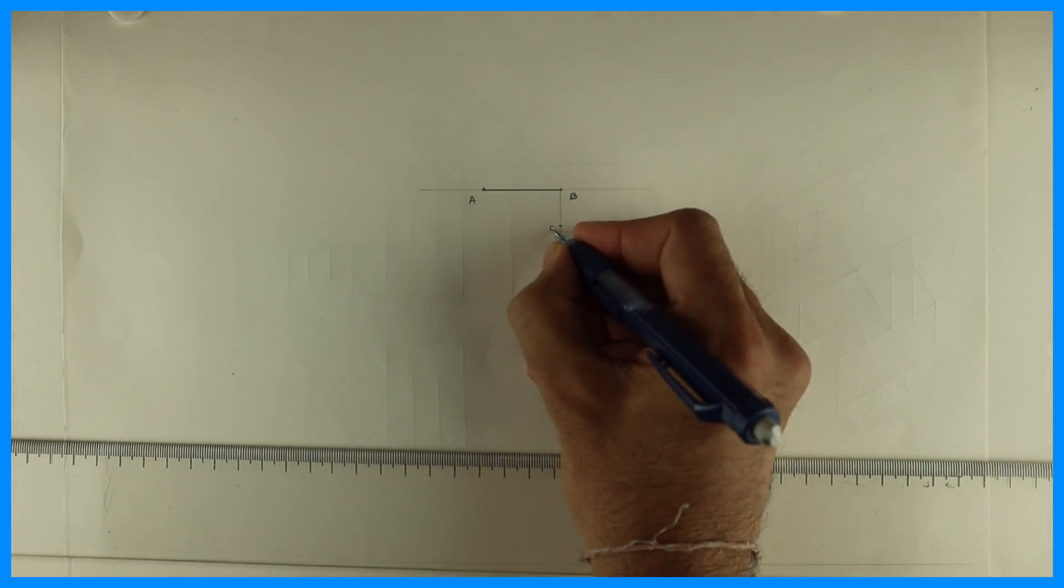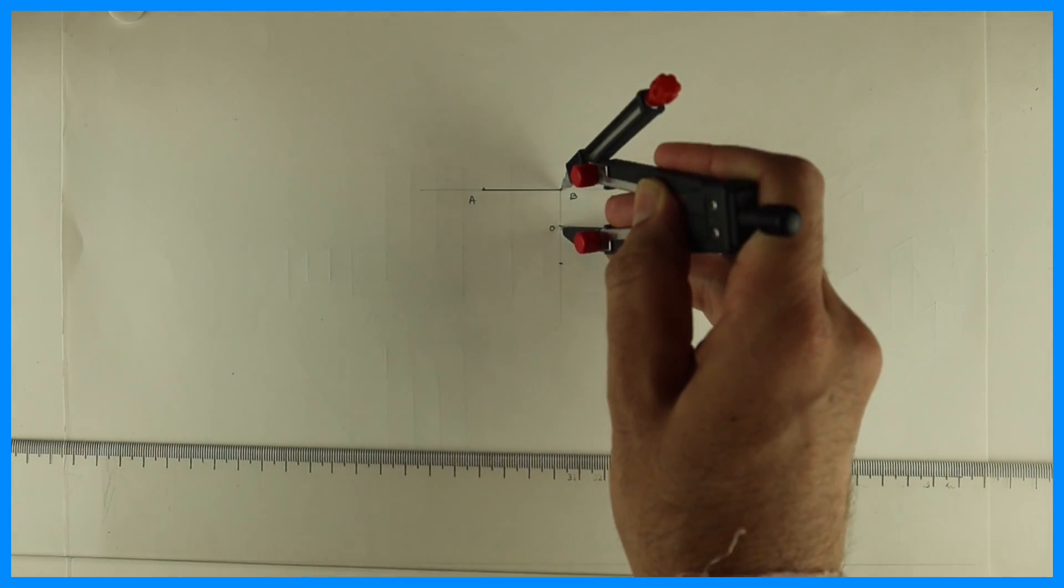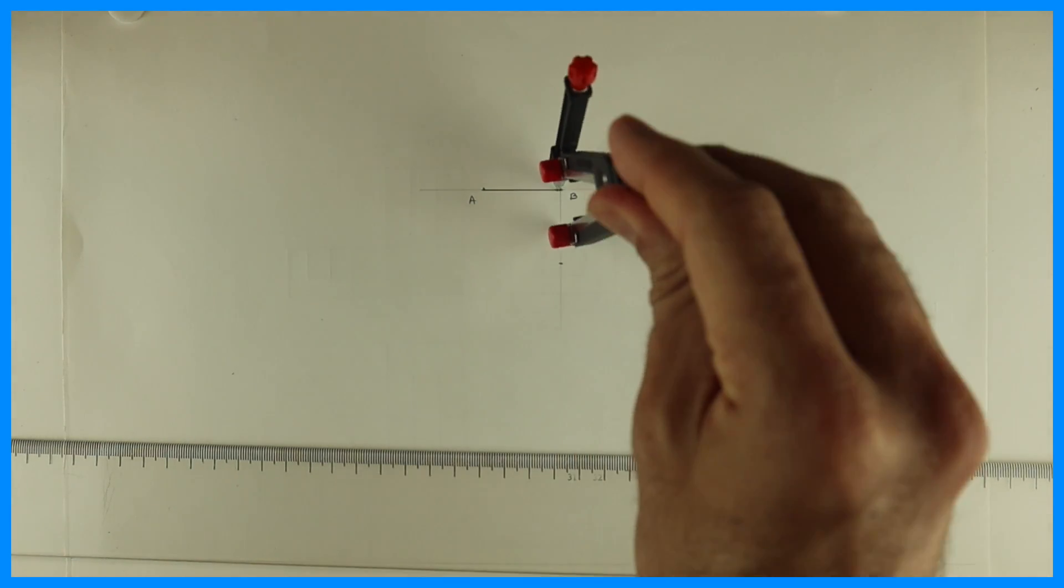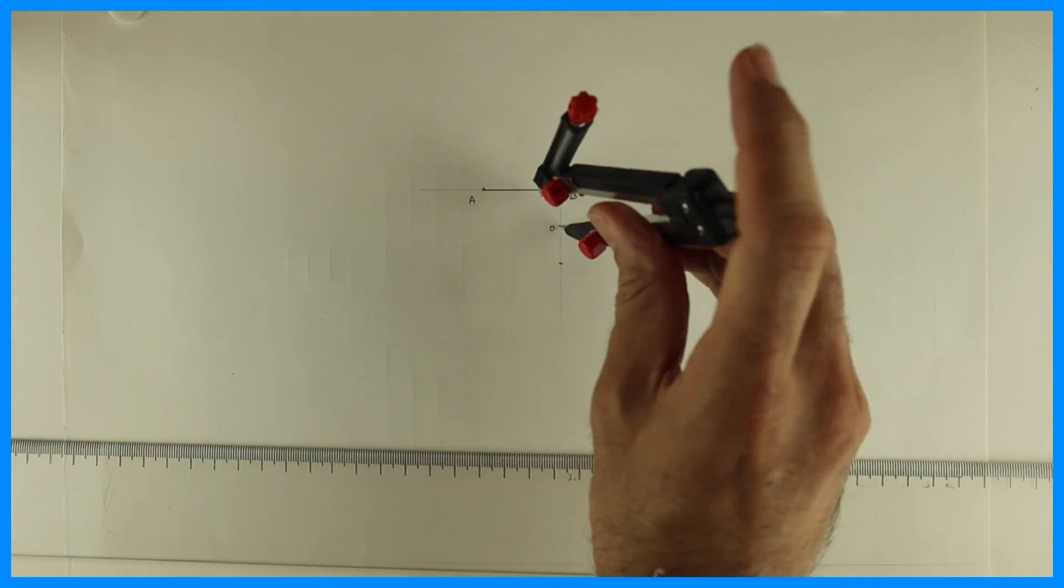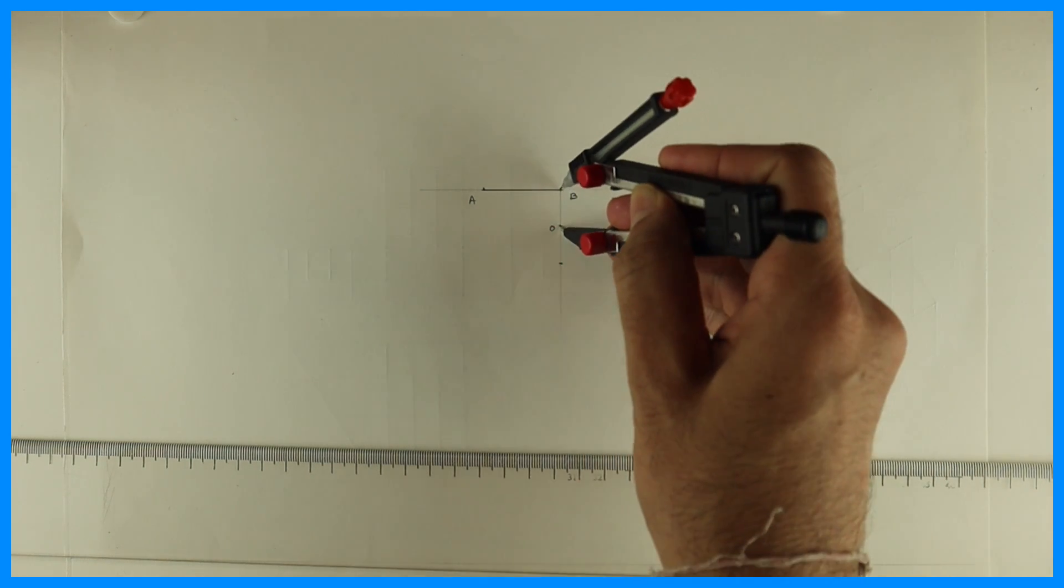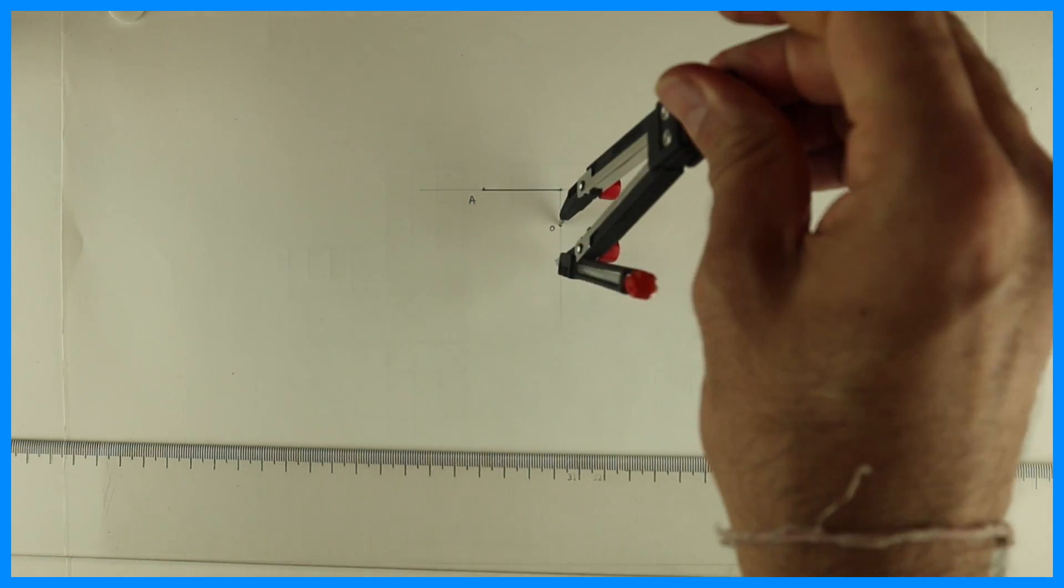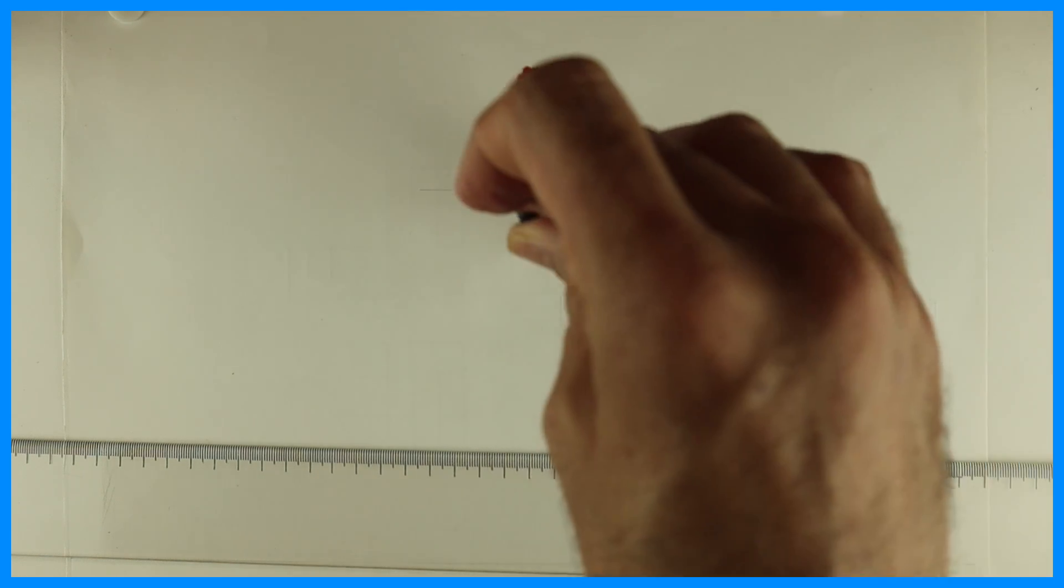Then I will bisect that point, that line, then take O to B and I will draw arc.